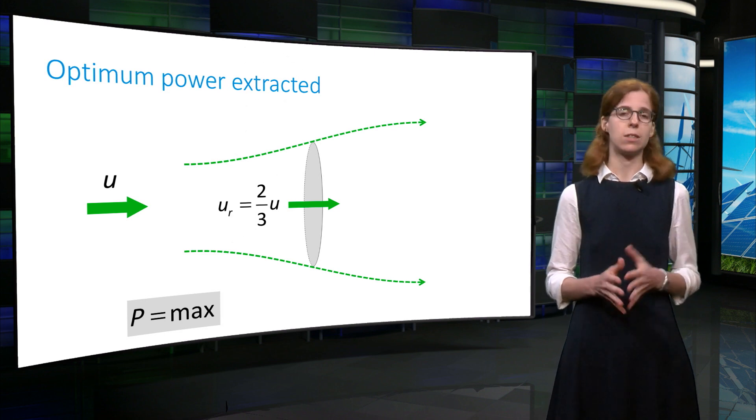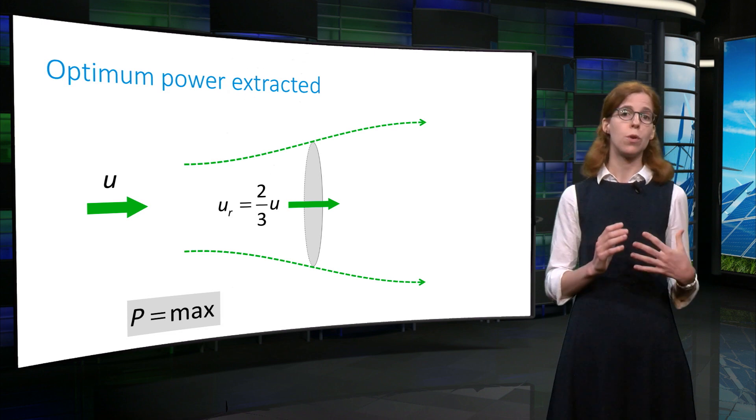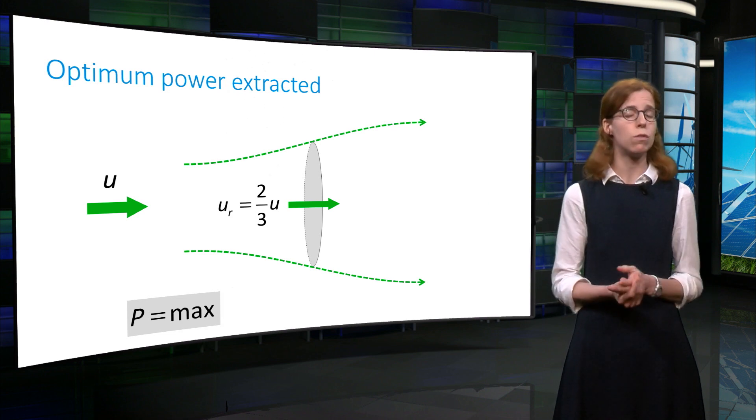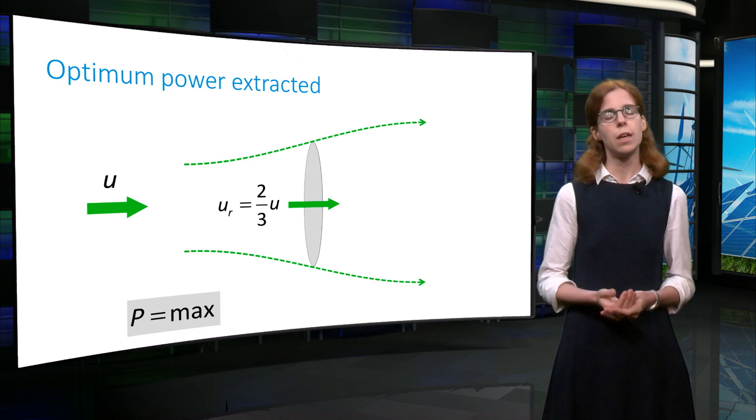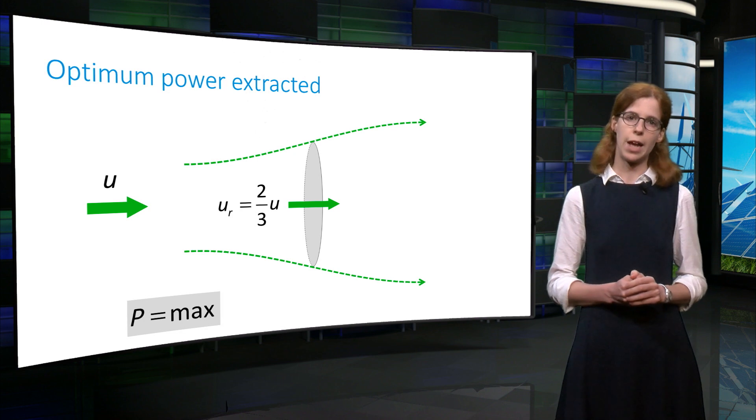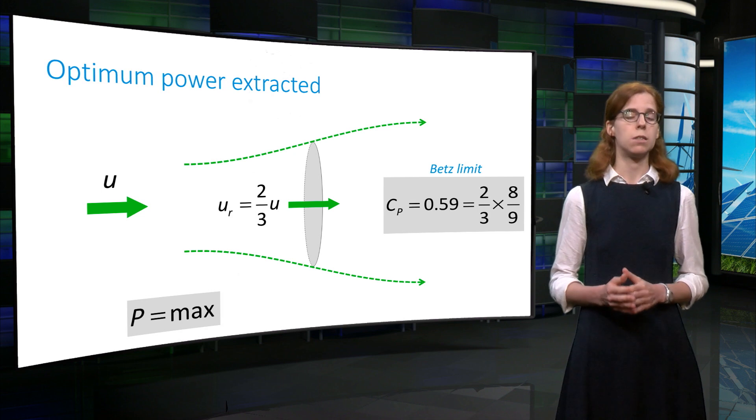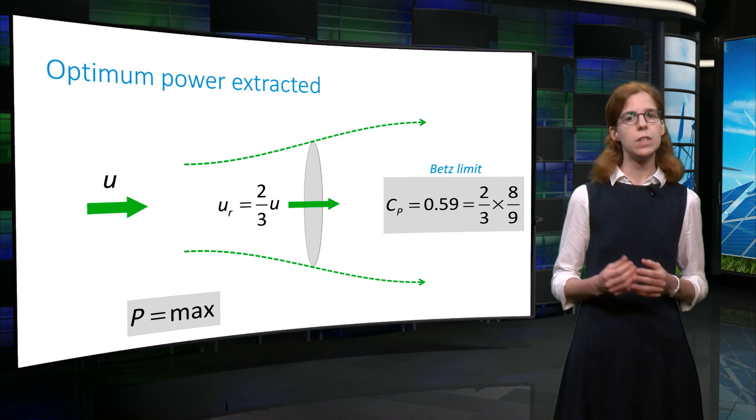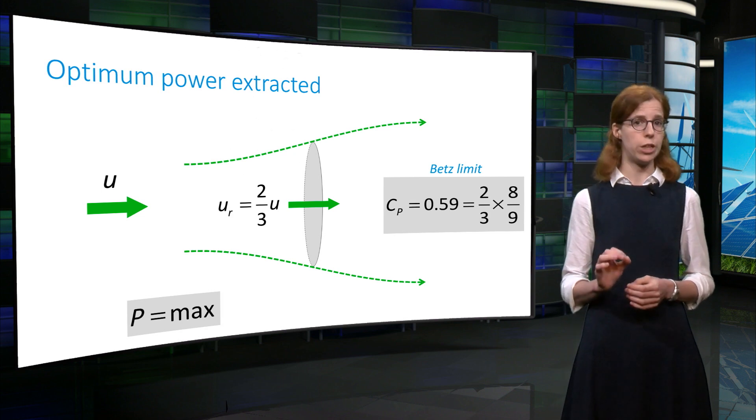This means that the rotor acts as a porous disk, exerting a constant force on the flow but while still letting two-thirds of the flow through it. In this case, the non-dimensionalized force exerted by the rotor is 8 over 9. With these values, the power extracted by the rotor is 59% of the total power available in the wind at the location of the rotor.